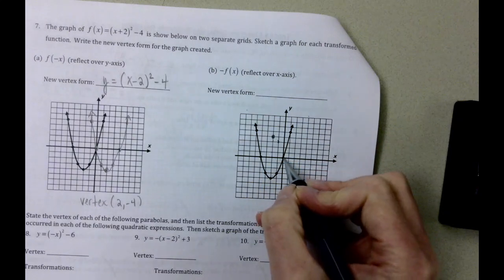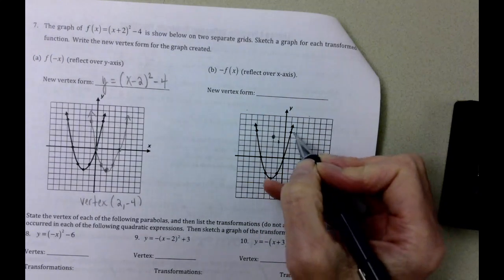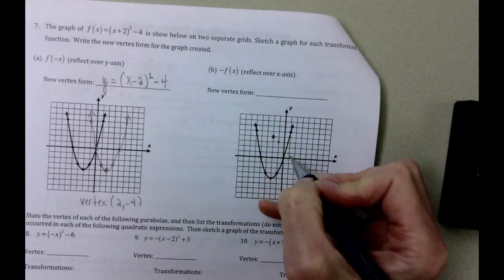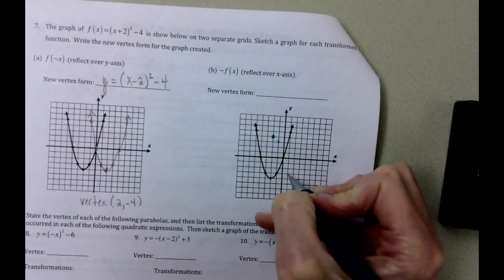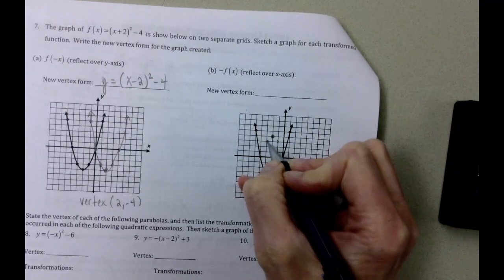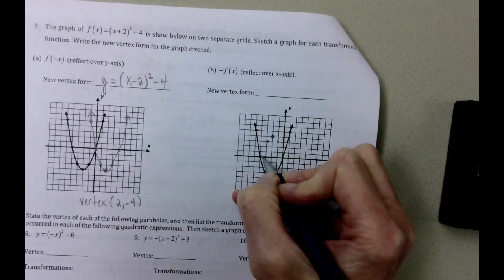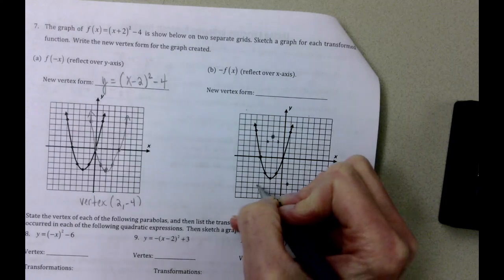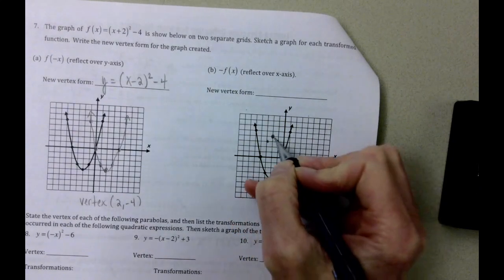This is on the x-axis. This point is still on the x-axis, so we're not going to move it. But this point here is 1, 2, 3, 4, 5 up, so 1, 2, 3, 4, 5 down. And we can continue there. Or we can notice the pattern.